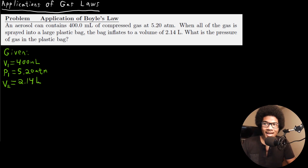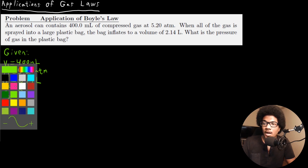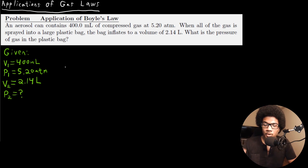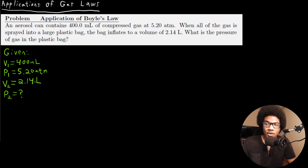We're asked what is the pressure of the gas in the plastic bag after it inflates, so we're solving for P2. It's a good idea to list all givens before starting the problem. First thing to notice is that if we're going to use Boyle's Law, all units must be the same. We have a mismatch with our volume units — initial volume in milliliters and final volume in liters — so we need to convert the initial volume to liters.